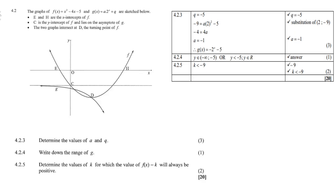For 4.2.3, determine the values of a and q from g(x) = a · 2^x + q. Since C lies on the asymptote of g and the y-intercept of f is −5, q = −5. Substitute D = (2, −9): −9 = a · 2² − 5, so a = −1. The equation is g(x) = −2^x − 5. For 4.2.4, the range of g: g is the exponential graph lying below −5, so the range is y < −5.